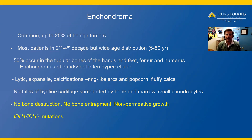Half of enchondromas occur in the tubular bones of the hands and feet, the femur, or the humerus. Of note, enchondromas in the hands and feet are often hypercellular. Seeing hypercellularity by itself should not make you think it has to be a chondrosarcoma — in the hands and feet, enchondromas are often hypercellular.